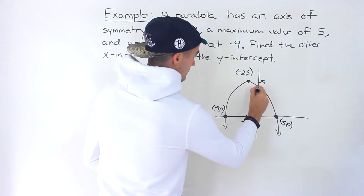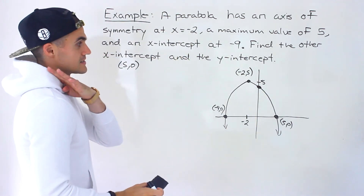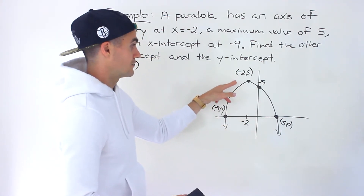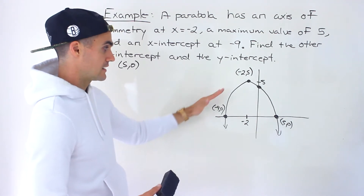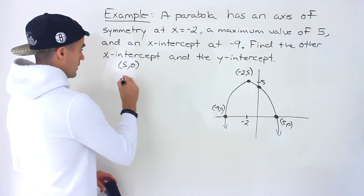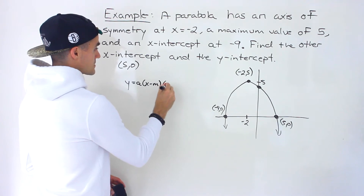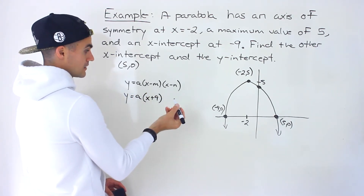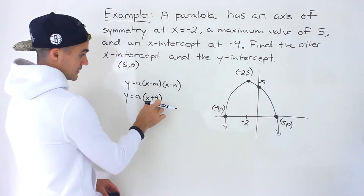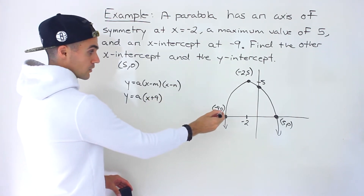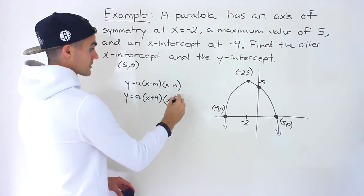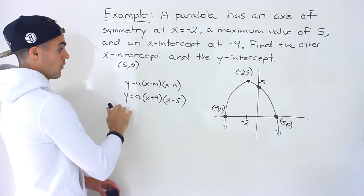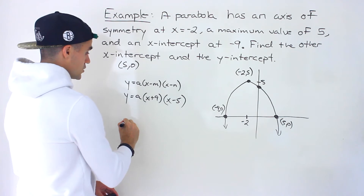How can we get the y-intercept? We have to find the actual equation of this parabola. Because we're given the intercepts and the vertex, we can use either factored form or vertex form. I'm going to use factored form: y equals a times (x minus m)(x minus n). The x-intercept at negative 9 gives factor (x plus 9), and the x-intercept of 5 gives factor (x minus 5). Then we plug in the vertex, negative 2 and 5, for x and y to solve for the a value.